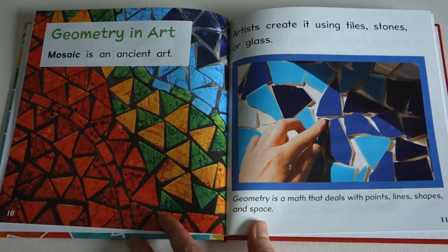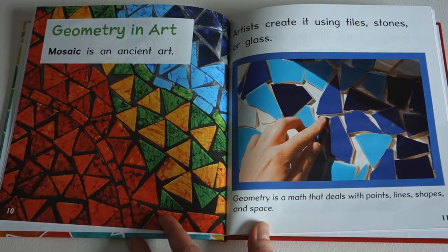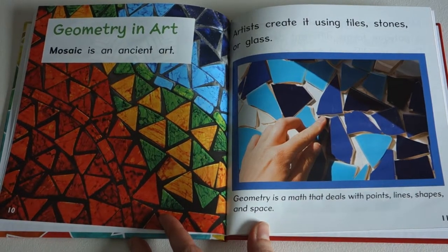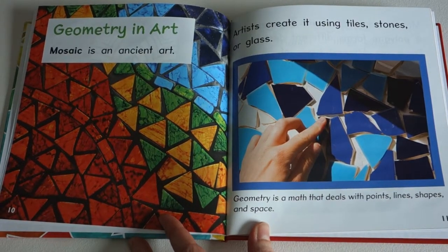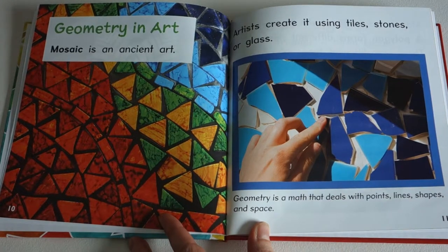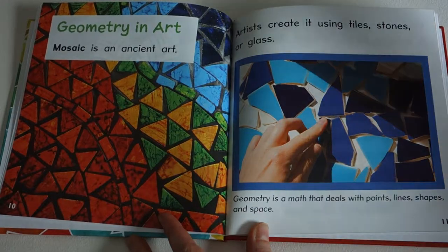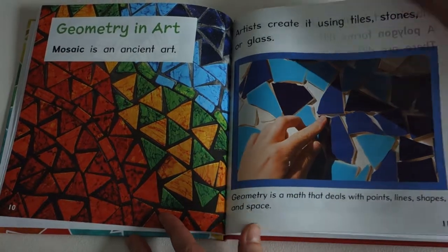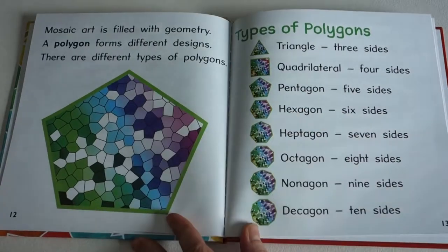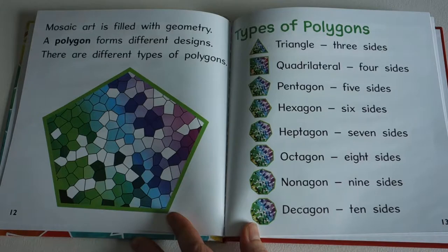Geometry in art. Mosaic is an ancient art. Artists created using tiles, stones, or glass. Geometry is a math that deals with points, lines, shapes, and space. Mosaic art is filled with geometry.